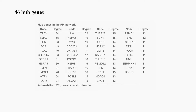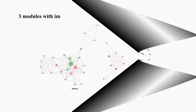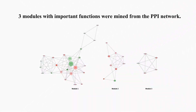Furthermore, 46 hub genes, such as tumor protein 53, JUN, and ITGA2, were screened out, and three modules with important functions were mined from the protein-protein interaction network.